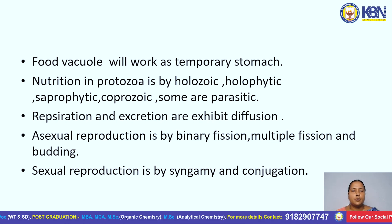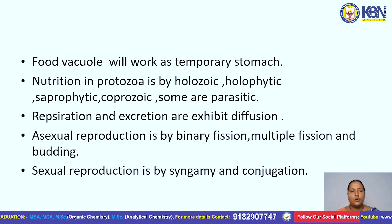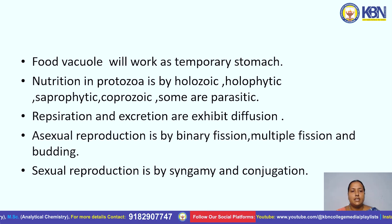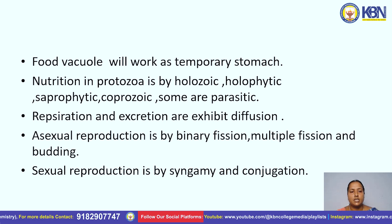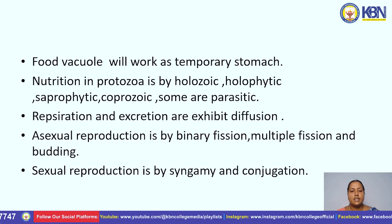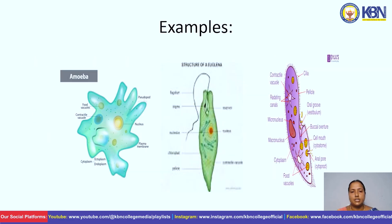Nutrition in protozoa is by holozoic, holophytic, saprophytic, and saprozoic modes. Some are parasitic. Respiration and excretion occur by diffusion. Asexual reproduction is by binary fission, multiple fission, and budding. Sexual reproduction is by syngamy and conjugation.